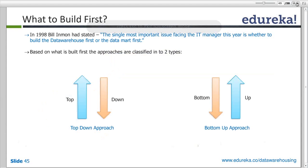To explain the two design approaches, there's a historical fact: in 1998, Bill Inmon stated that 'the single most important issue facing the IT manager this year is whether to build the data warehouse first or the data mart first.' With this question in mind, two approaches were designed: the top-down approach and the bottom-up approach.